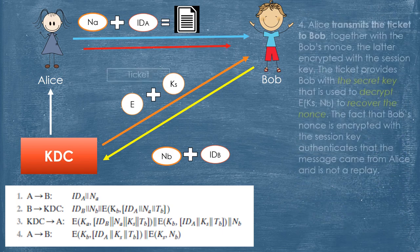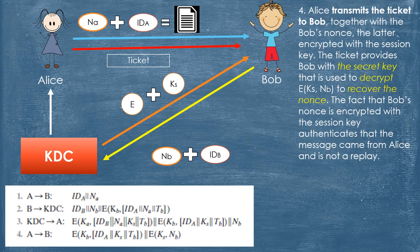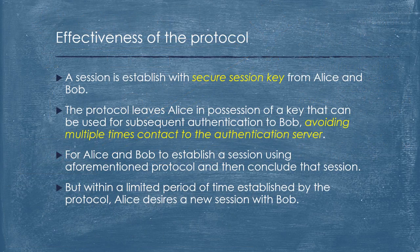Step 4: Alice transmits the ticket to Bob, together with Bob's nonce, the latter encrypted with the Session Key. The ticket provides Bob with a secret key used to decrypt and recover the nonce. The fact that Bob's nonce is encrypted with the Session Key authenticates that the message came from Alice and is not a replay. A session is then established with a secure Session Key between Alice and Bob.